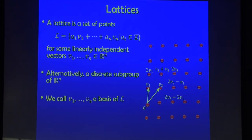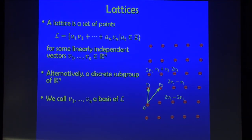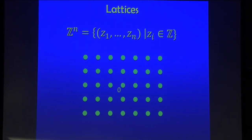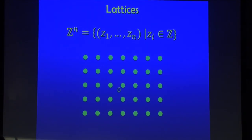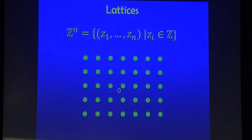A more mathematically mature way of defining it is as a discrete subgroup of R^n — that's equivalent. Those vectors are referred to as a basis. For the purpose of this talk, just think of it as a grid of points in n-dimensional space. The most famous lattice is Z^n, the lattice of integers, and all other lattices are just linear transformations of this specific one.